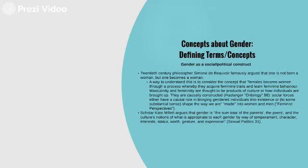In terms of gender as a social construct, one place to start is with 20th century French philosopher Simone de Beauvoir, who famously argued that one is not born a woman, but one becomes a woman. A way to understand this is to consider the concept that females are designated by sex versus gender — women acquire feminine traits and learned feminine behavior. Those are acquired and learned, not inherent or biologically inherent. They're learned concepts through culture. Masculinity and femininity are taught — it's nurture, not nature.